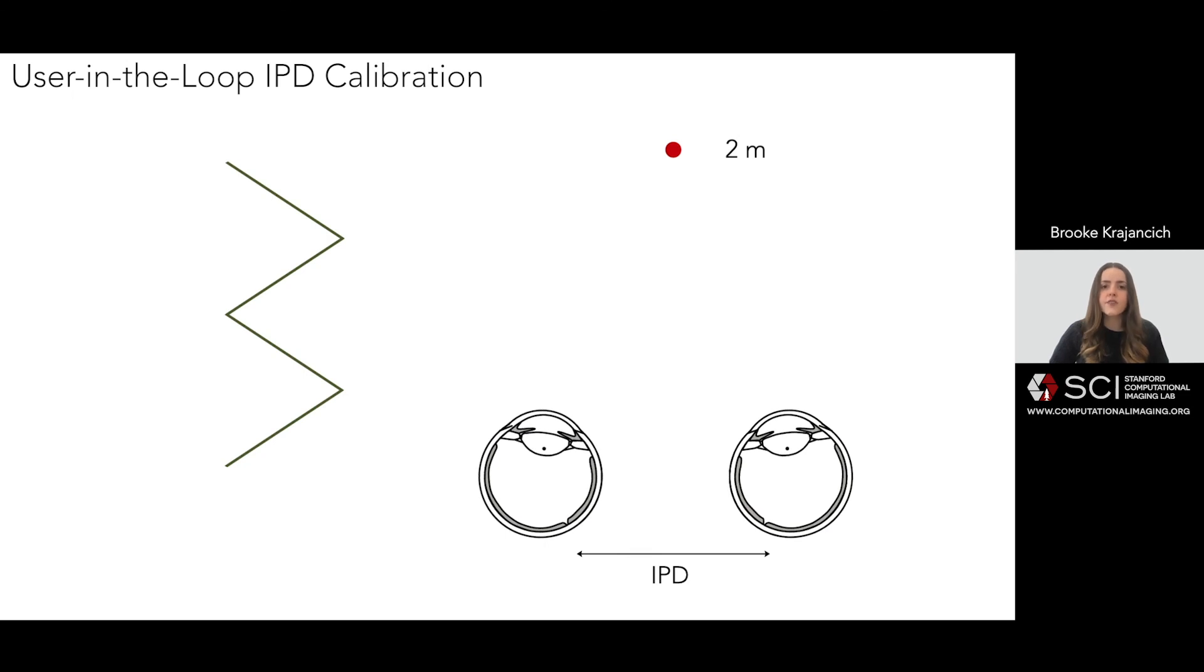This is far enough such that the separation of the no parallax points and centers of rotation are close enough such that the gaze contingent approach should be indistinguishable from conventional stereo rendering. We asked users to perfectly calibrate their IPD for this distance by adjusting the pattern to exhibit 90 degree angles. In this way, we can compare to the best case scenario possible with a fixed IPD.